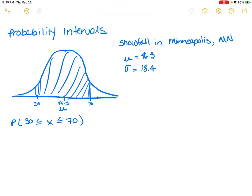So he goes on to ask, what is the probability that the snowfall will be between 30 and 70 inches? So greater than or equal to 30, but less than or equal to 70. I took the liberty to go ahead and draw this out. This is the mean, 46.3. What is the probability that the snowfall is going to be between 70 and 30 inches? What this essentially is asking us to do is to find the area under the curve between 70 and 30.